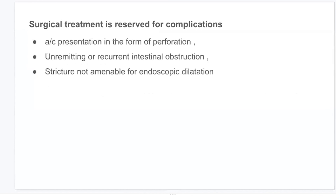Surgical treatment is reserved for complications, especially acute presentations such as perforation and remitting or recurrent intestinal obstruction, and strictures not amenable to endoscopic dilatation. In intestinal tuberculosis, strictures are usually short, smooth, and concentric and usually respond to endoscopic dilatation; surgery is indicated only for recurrent strictures not amenable to endoscopic dilatation.